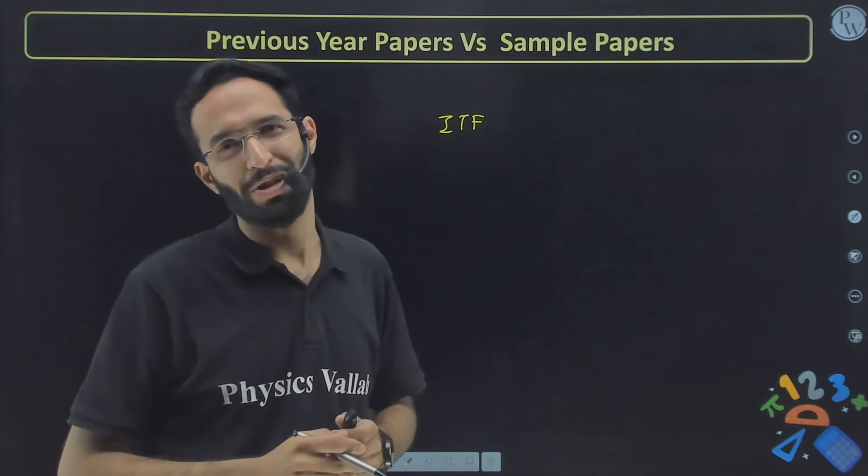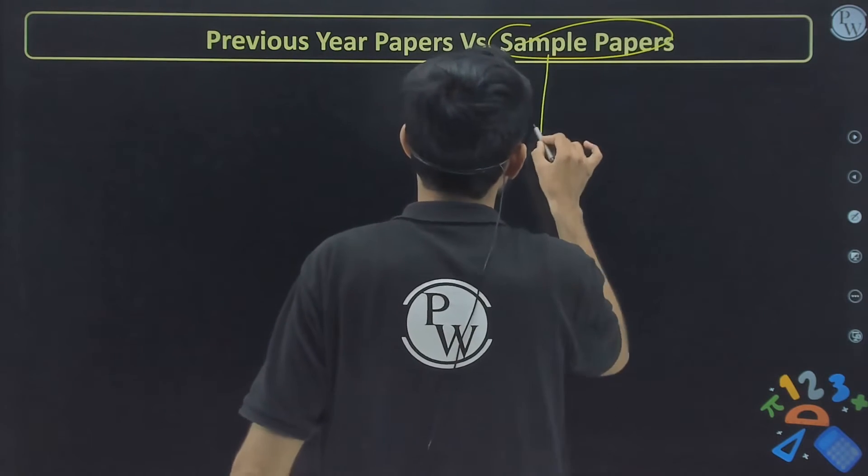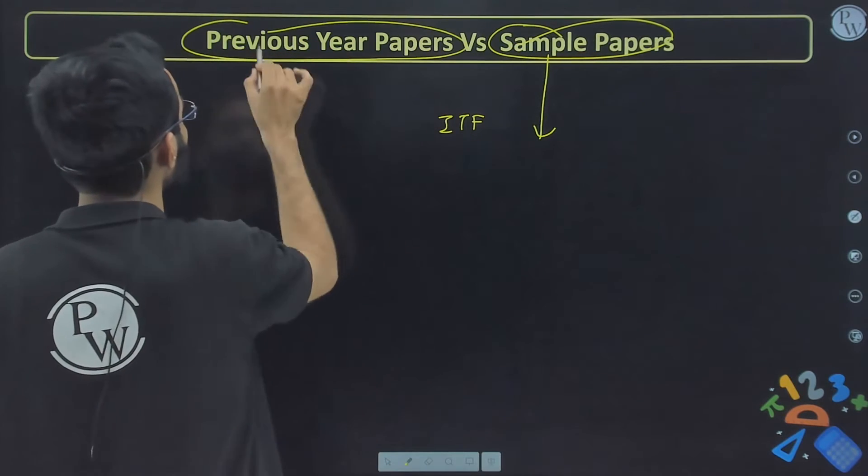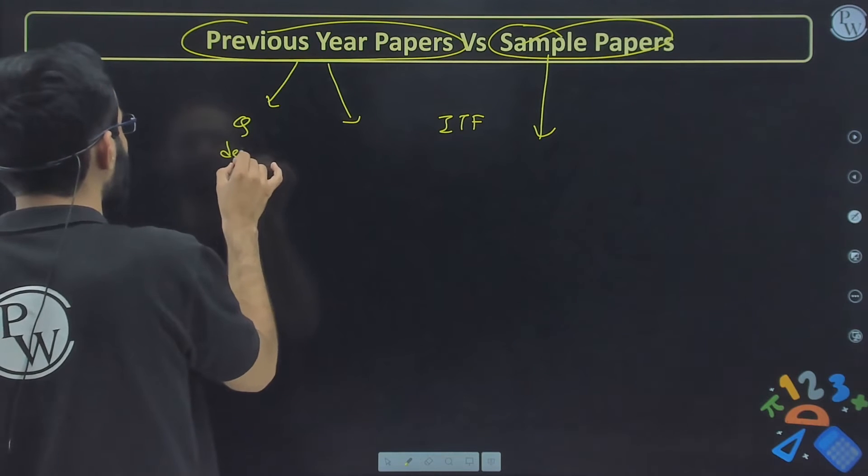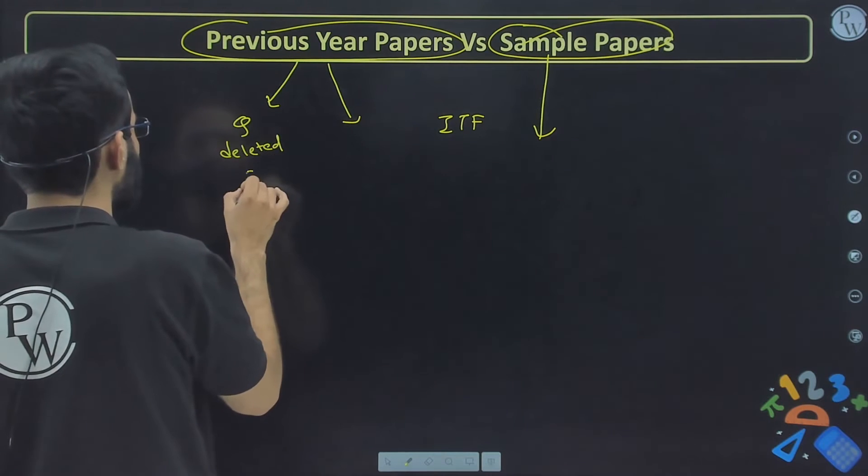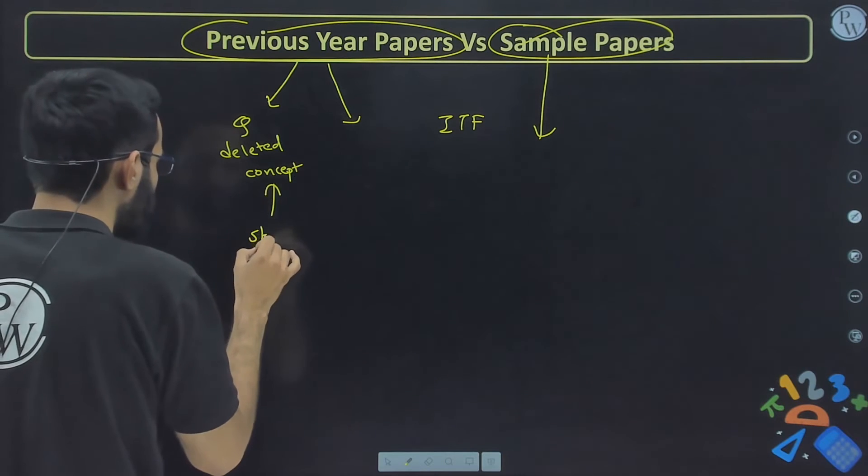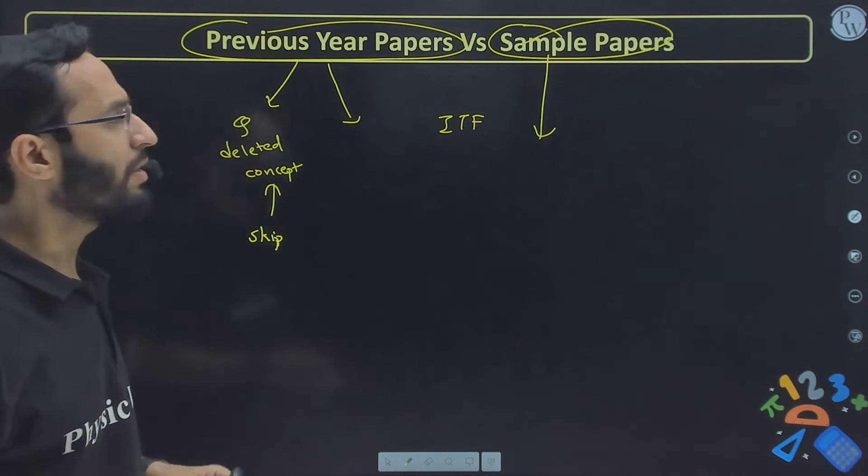Very first you need to focus on sample papers. You should go for previous papers as well, but for previous paper you should be able to analyze that yes, this question is from deleted concept, so we should skip this question. If this is from deleted concept, then we should skip this. You should be able to analyze, you should be able to identify.